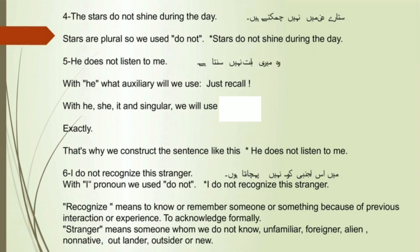Sentence 5: He does not listen to me. With 'he,' what auxiliary will we use? Just recall please. That's why we construct the sentence like this: He does not listen to me.